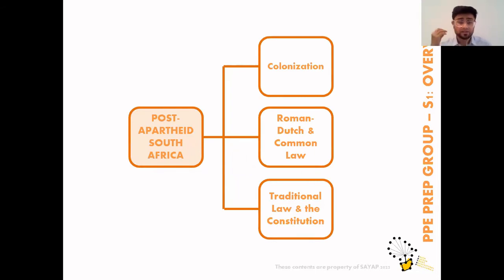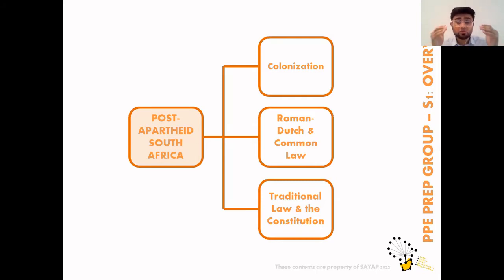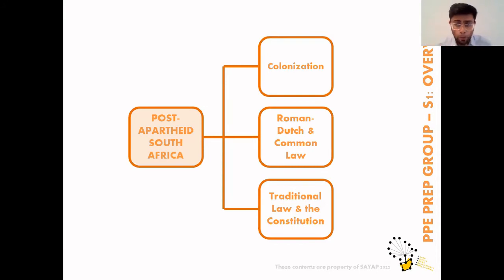Now let's talk about post-apartheid South Africa. South Africa was colonized — first by the British — and a lot of those oppressive regimes filtered down into apartheid South Africa. Apartheid was a law which discriminated against people of color. Post-apartheid South Africa — once apartheid had been abolished — there was a new move in the country towards a progressive future. I'm not a lawyer, but I'm giving you the context of law from an architecture perspective, the way I understand it.